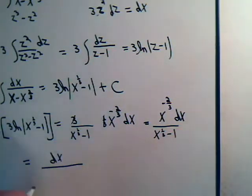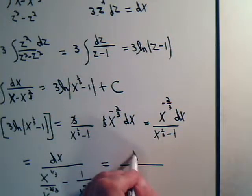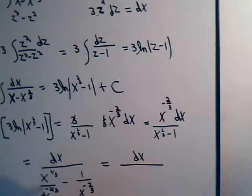And then down here we have x to the one-third divided by x to the minus two-thirds, which equals dx divided by x to the one-third times x to the two-thirds.